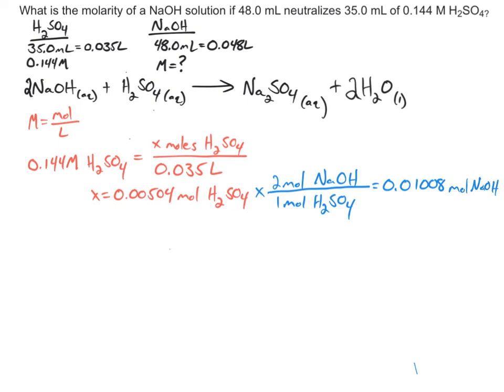Lastly, we need to solve for the molarity of that sodium hydroxide solution. So once again, we can go back to molarity is equal to moles over liters. We now know the moles of NaOH. And we're told how much we're dividing by, which is the liters of the sodium hydroxide solution, which was given to us as 0.048 liters. And then we can solve for this,